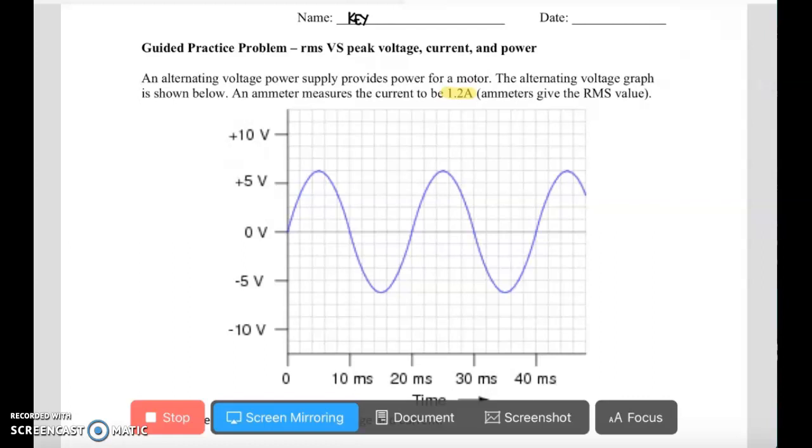We're reminded here that ammeters always give the RMS value. So really, we are given 1.2 amps is the RMS current.